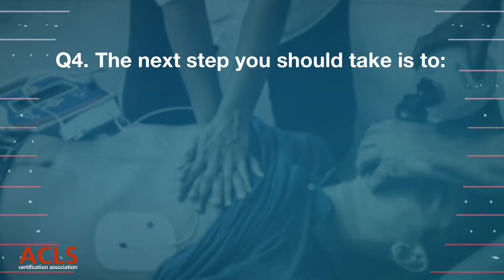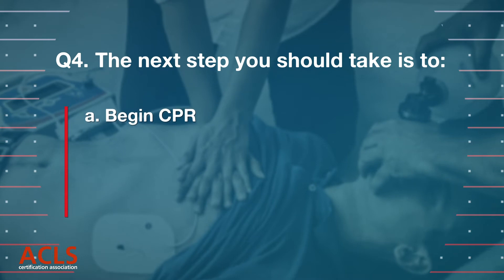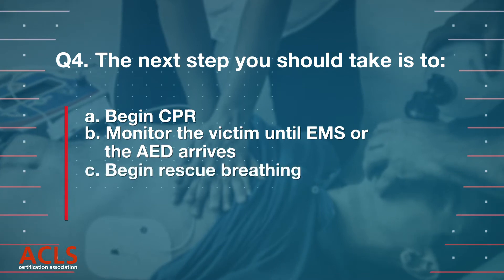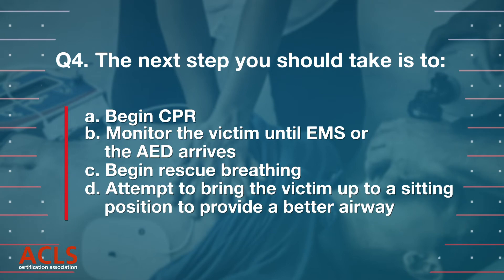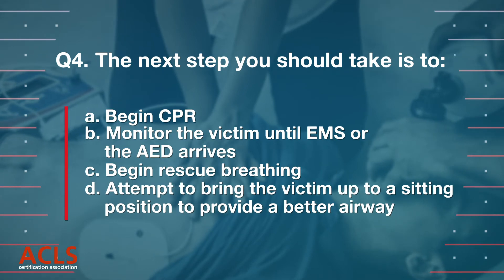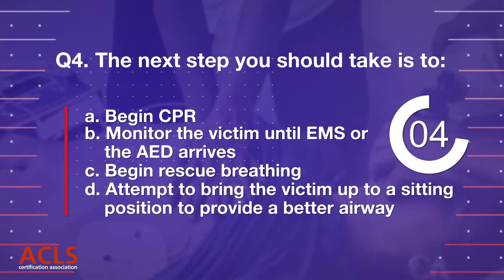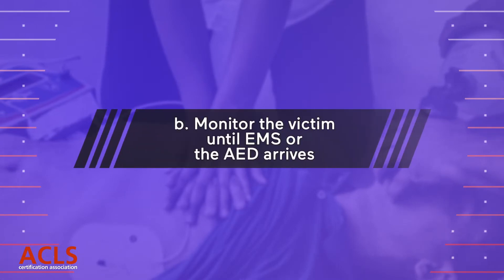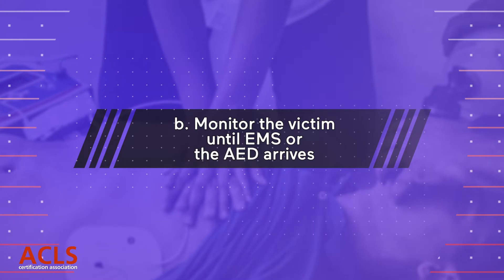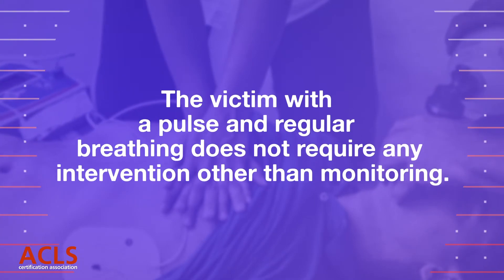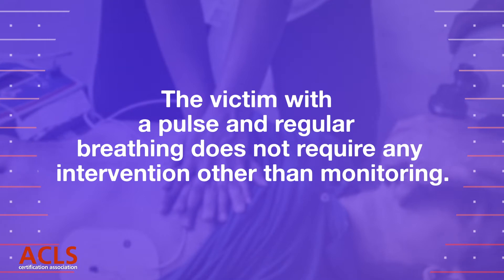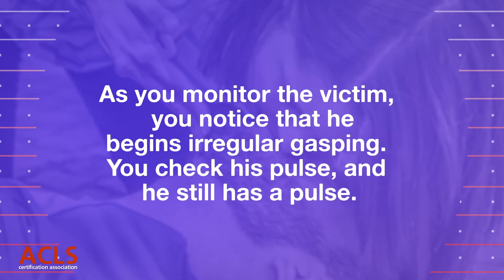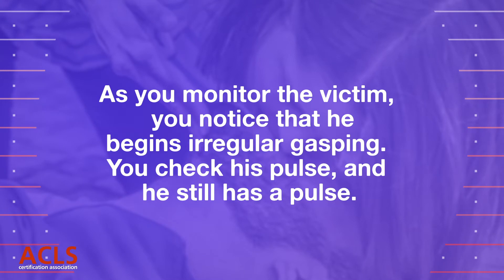Question 4: The next step you should take is to: A) begin CPR, B) monitor the victim until EMS or the AED arrives, C) begin rescue breathing, or D) attempt to bring the victim up to a sitting position to provide a better airway. Correct answer: B, monitor the victim until EMS or the AED arrives. The victim with a pulse and regular breathing does not require any intervention at this time. As you monitor the victim, you notice that he begins irregular gasping. You check his pulse and he still has a pulse.